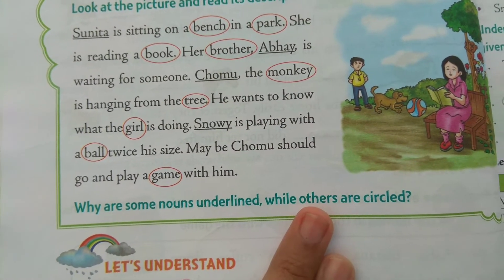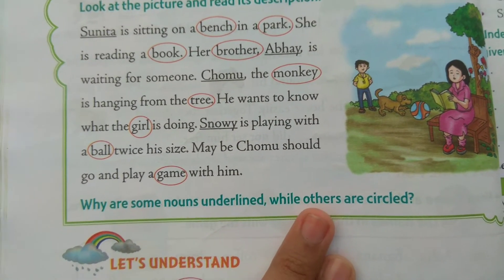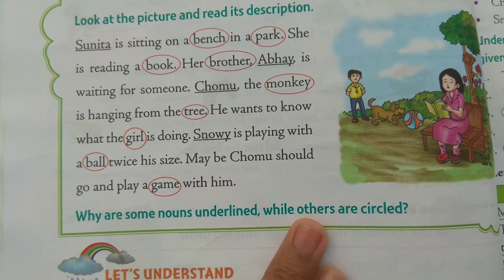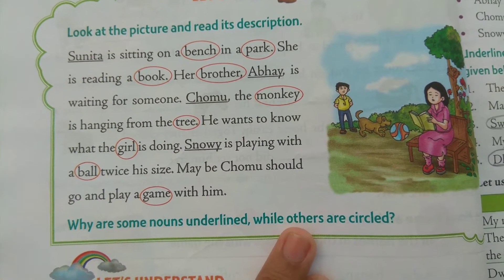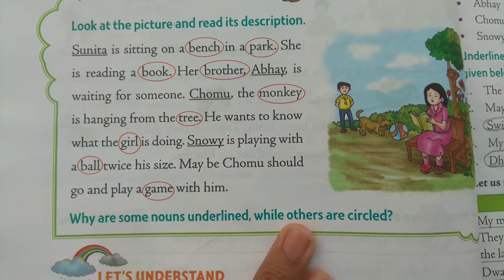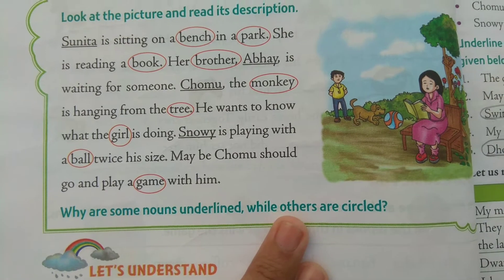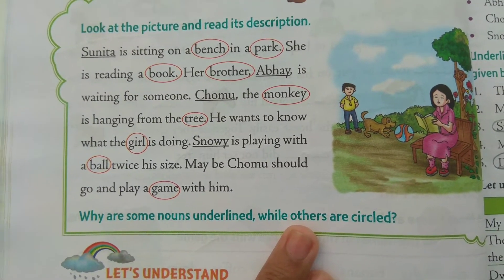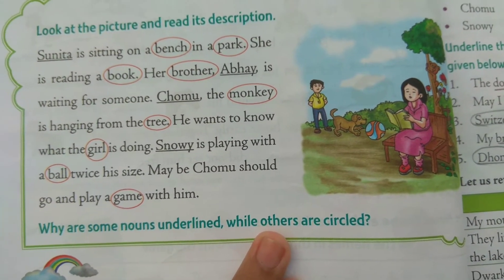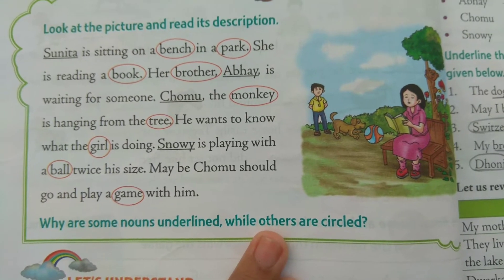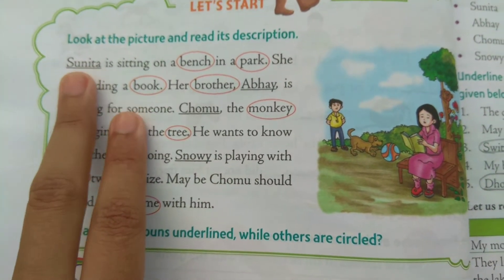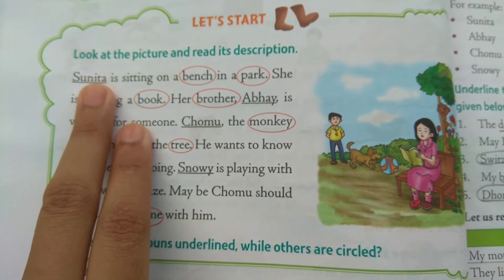What are the people? People can also be male and female. What is the common noun for girls? But if your name is Suneeta, Rama, Rani, Rekha, then what will happen? It will be proper noun.